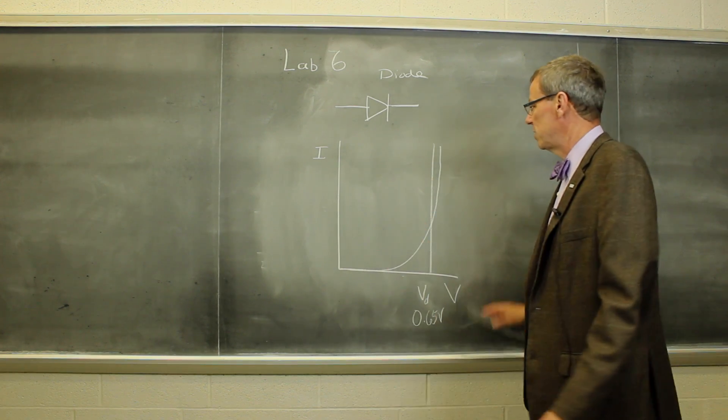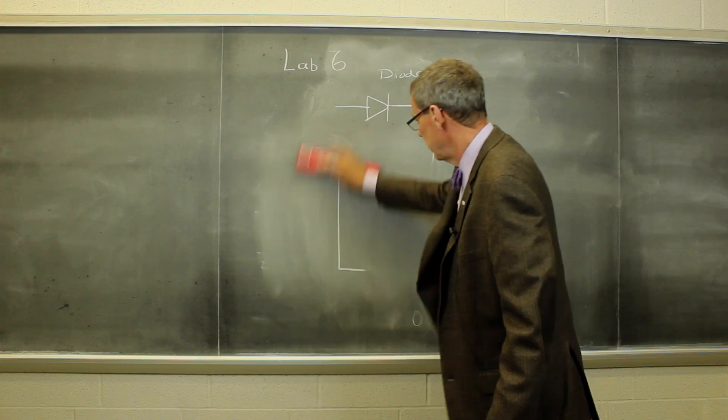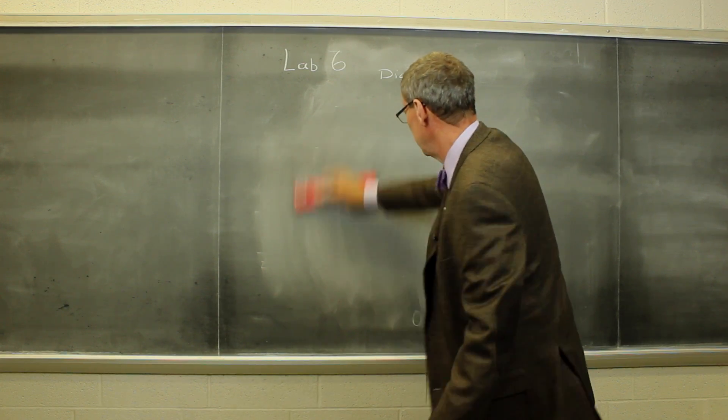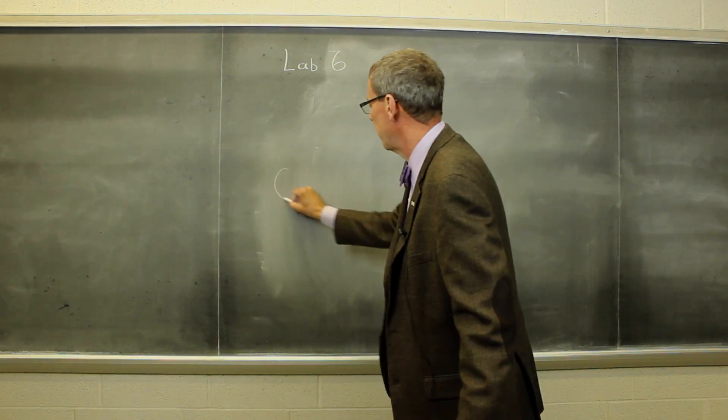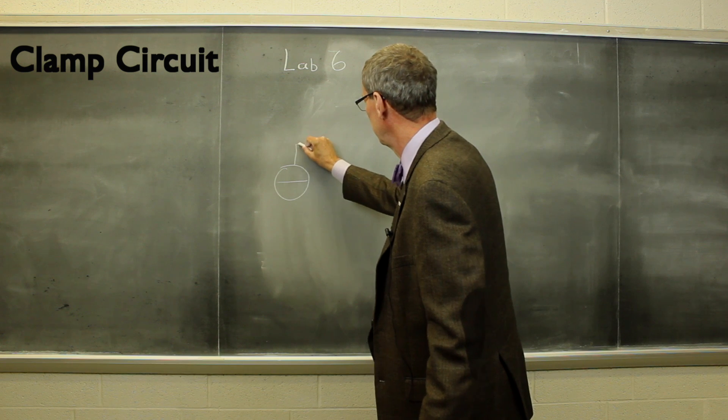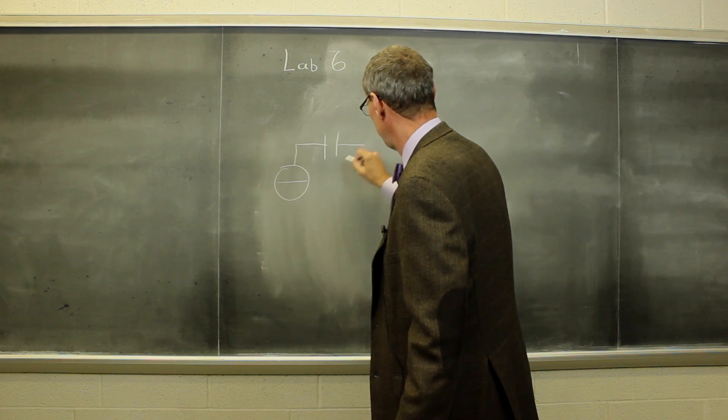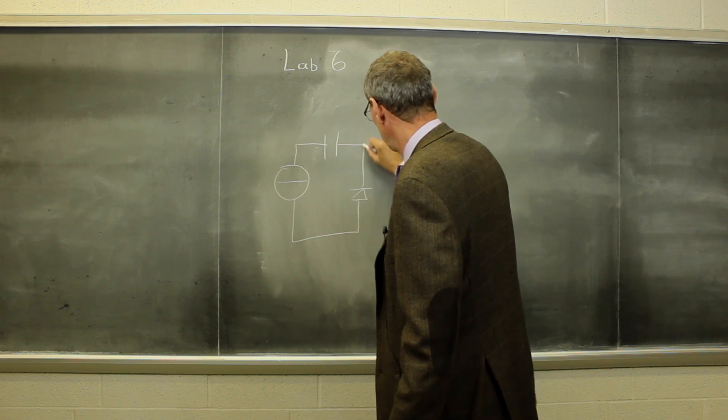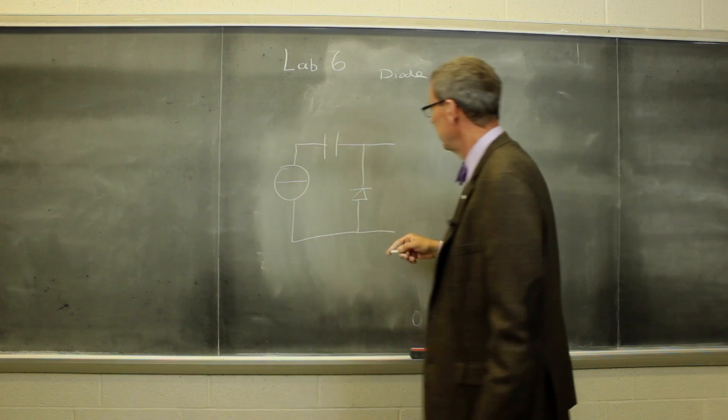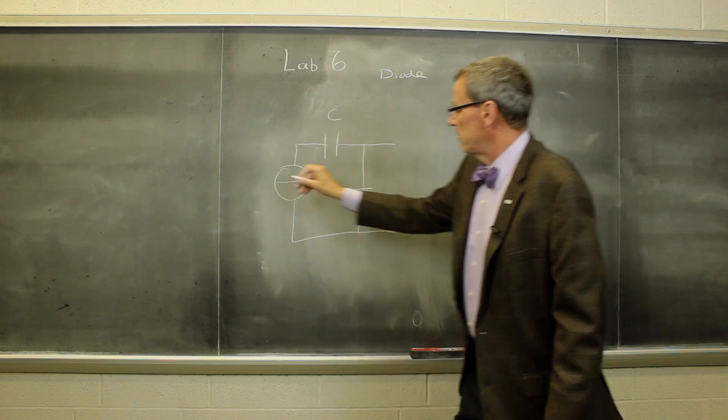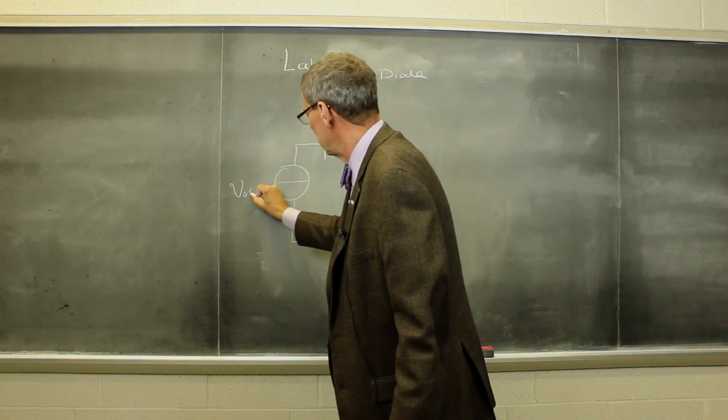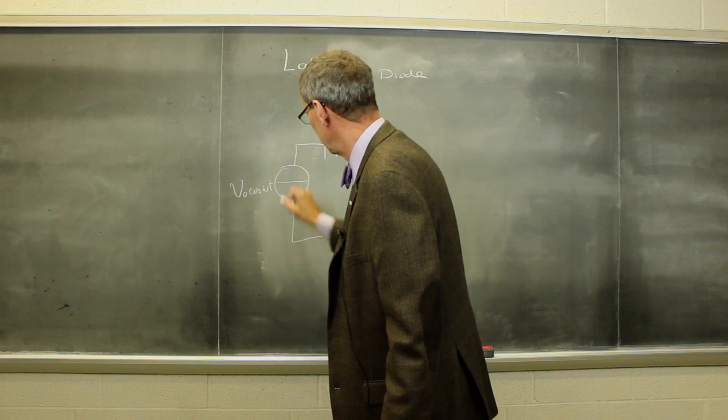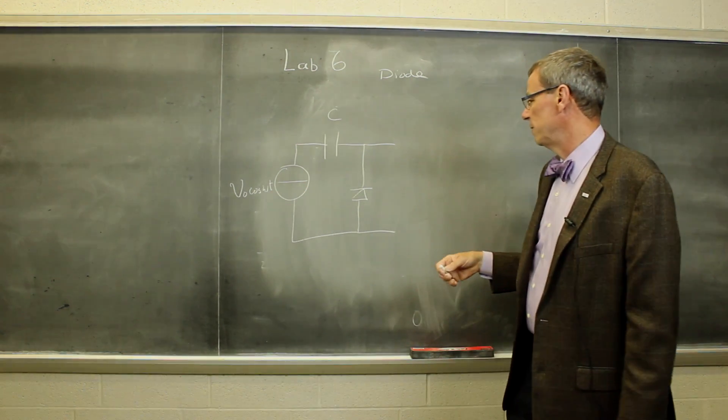So let's see how we're going to use this. We take the diode and we're going to start by putting it into a so-called clamper circuit. We have an AC input, a capacitor, and a diode here. And in this particular circuit, this is V0 cosine omega t, so there's some oscillatory voltage.